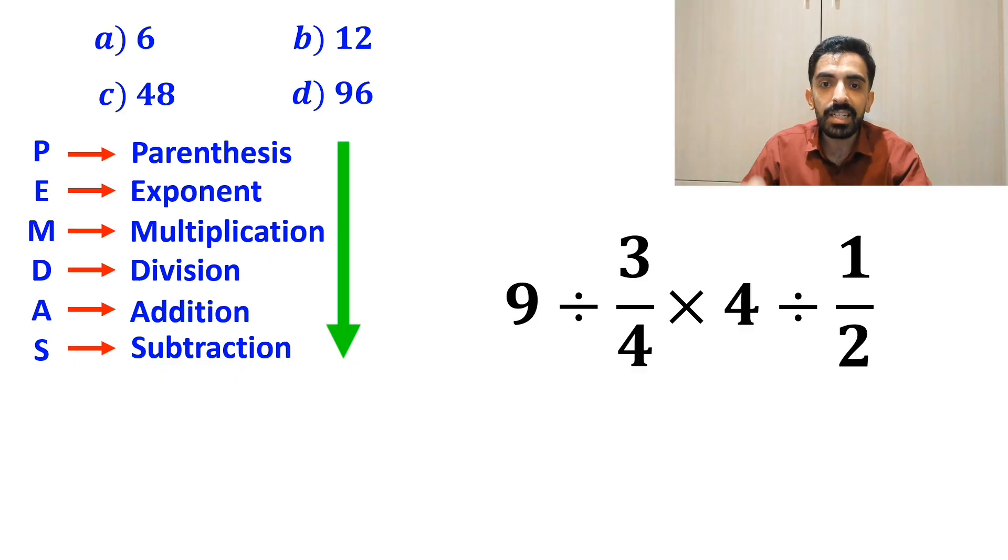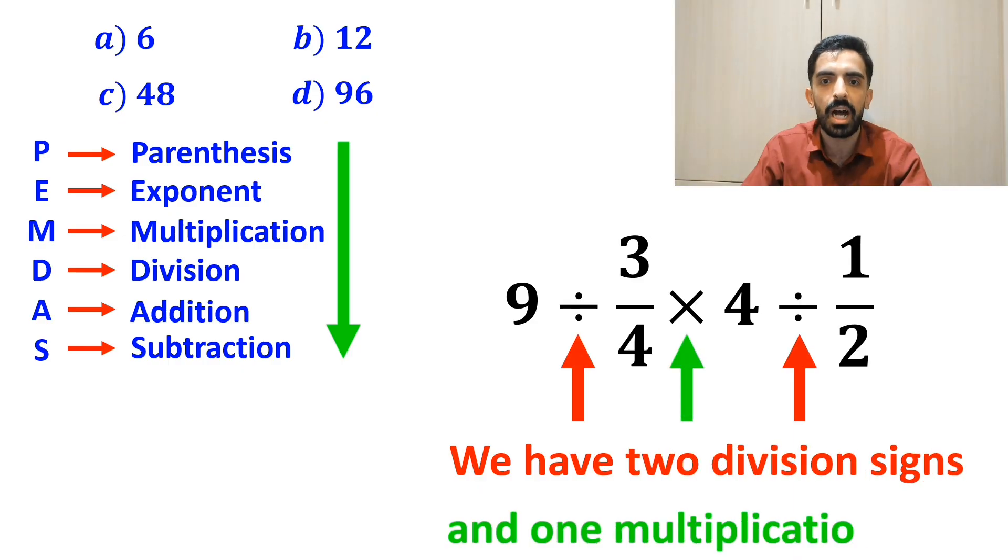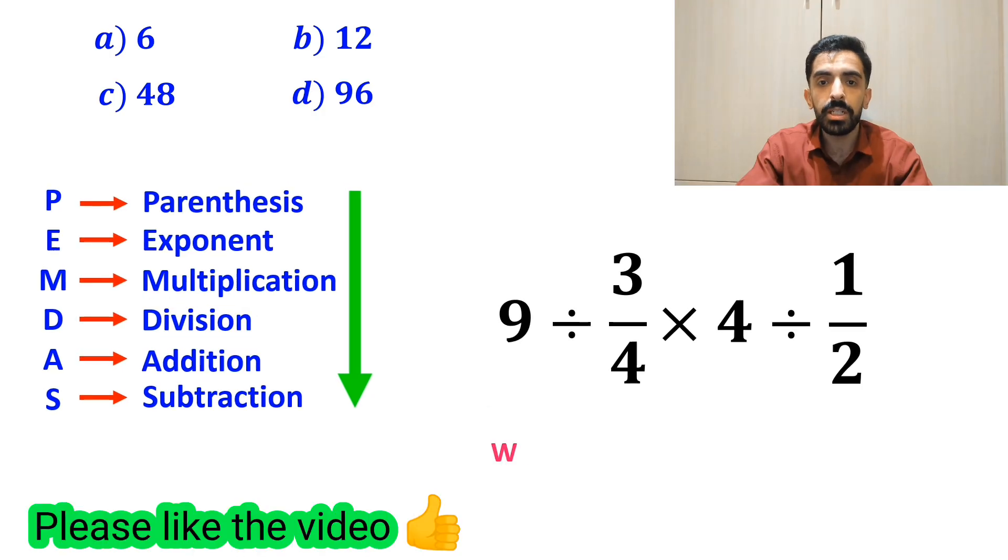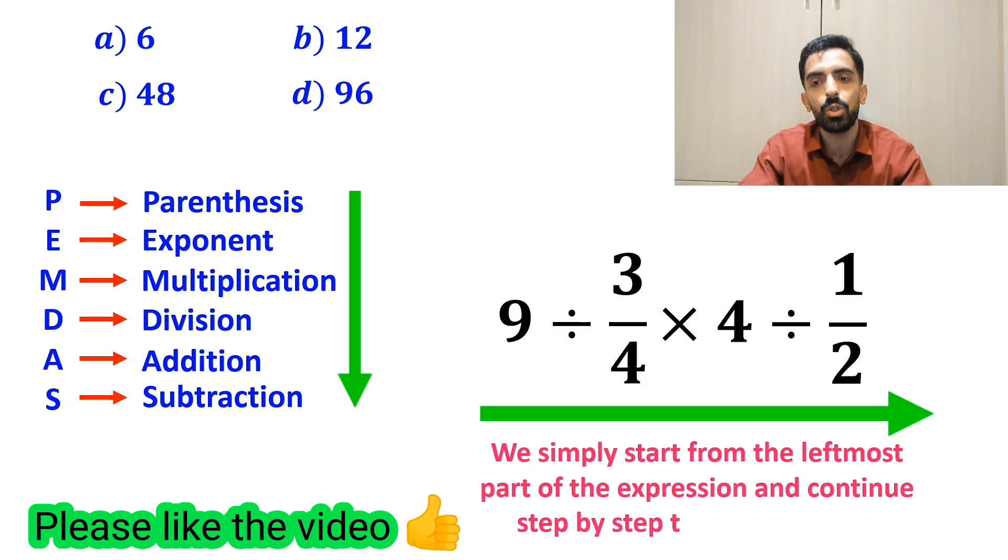Alright, as you can see in the image, in this expression, we have two division signs and one multiplication sign. It is very important to remember that multiplication and division are on the same level of precedence. So, in this case, we simply start from the leftmost part of the expression and continue step by step toward the right.